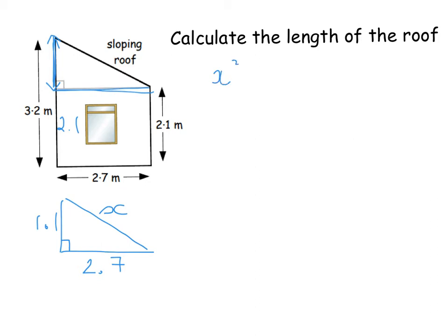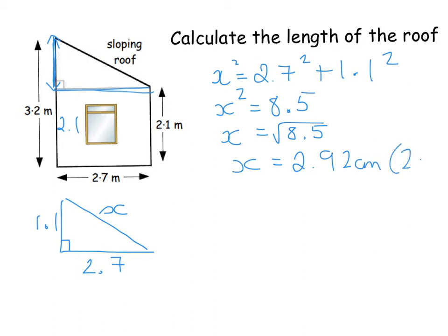So X squared is 2.7 squared plus 1.1 squared, which is 8.5. That's what X squared is. You still have to square root it. Remember that's your last step. And the square root of 8.5 gives us 2.92 centimeters to 2 decimal places. And I forgot to write that in my last video. I always write that at the side if I've done it to 2 decimal places, purely because it's not exactly 2.92. And that was all they wanted for that bit. They wanted the slope here if there was no extra bit to do at the end.